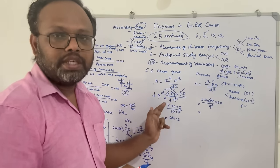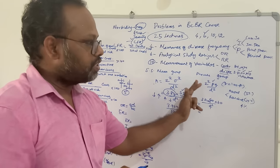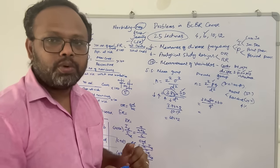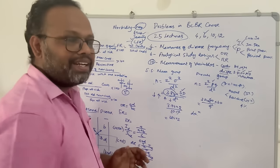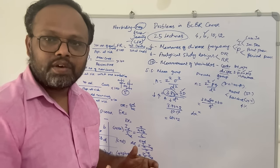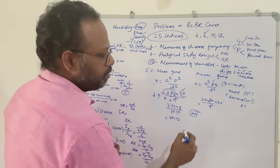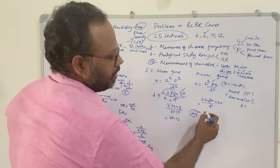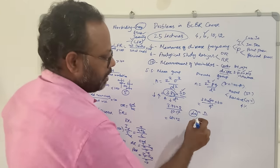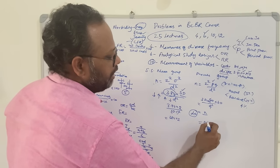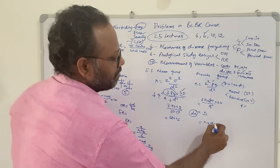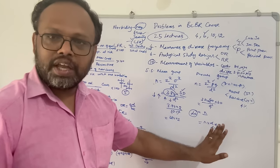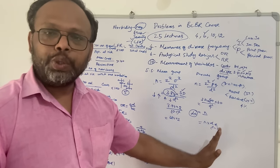When calculating sample size, we should also know about the design effect — the error arising from the sampling method. The actual sample size is n multiplied by the design effect. The design effect usually ranges between 1 and 2.